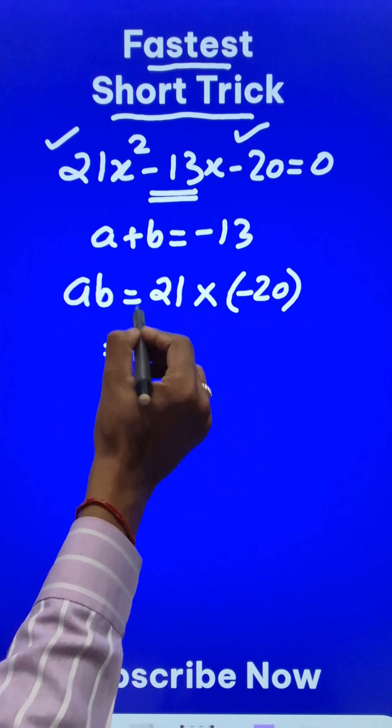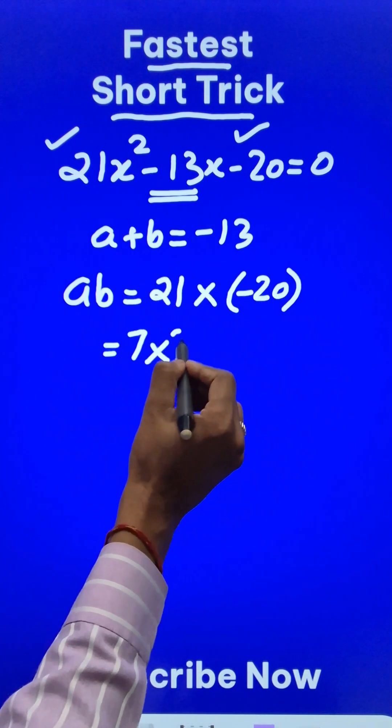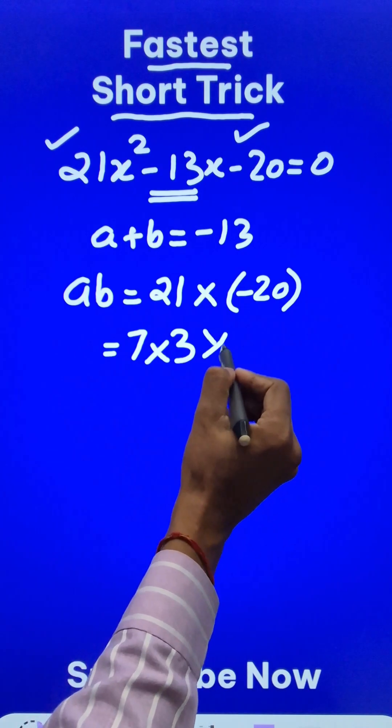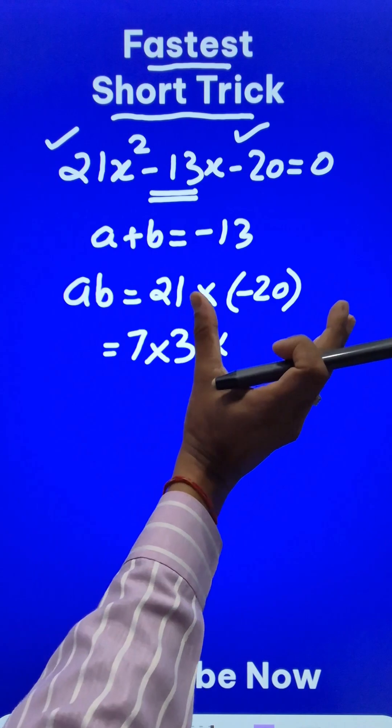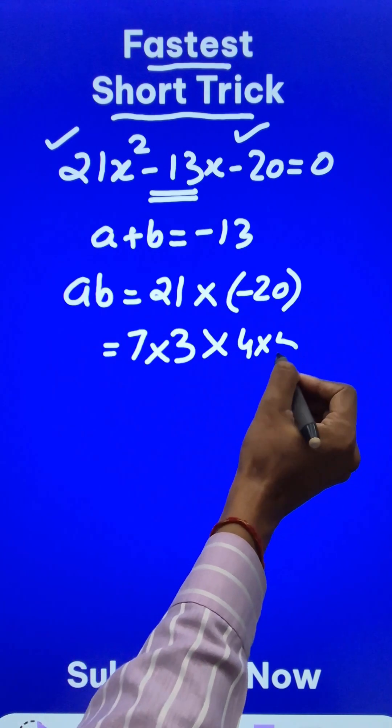So instead of multiplying these two, split 21 as 7 × 3—that's the only way you can do it—and split 20 in a different manner. Let's have two numbers which are very close together: 20 is 4 × 5.